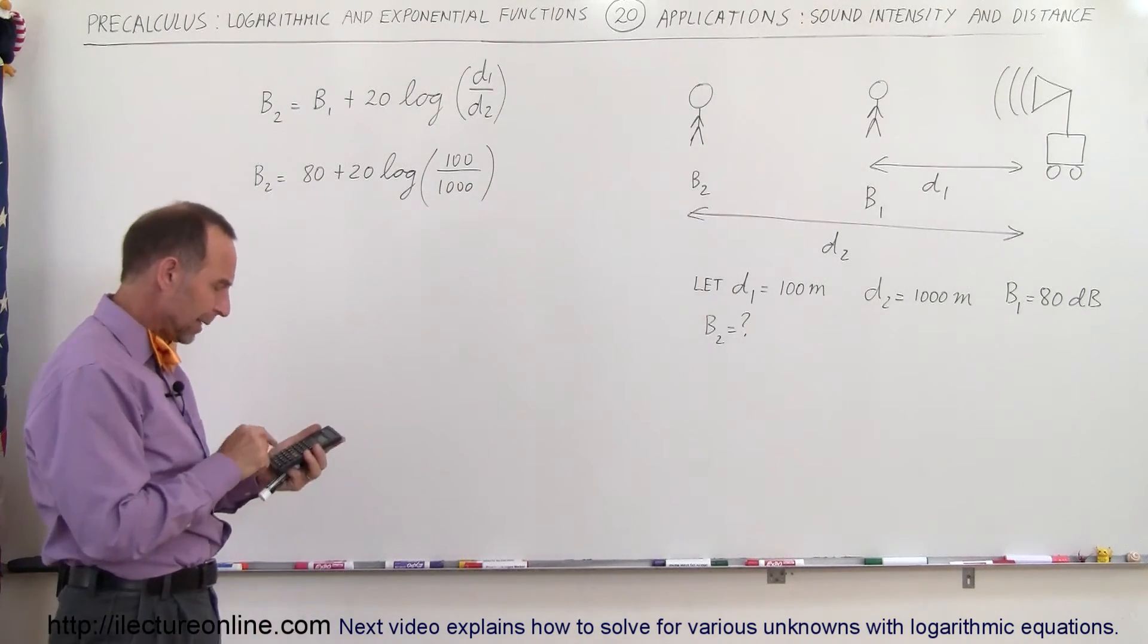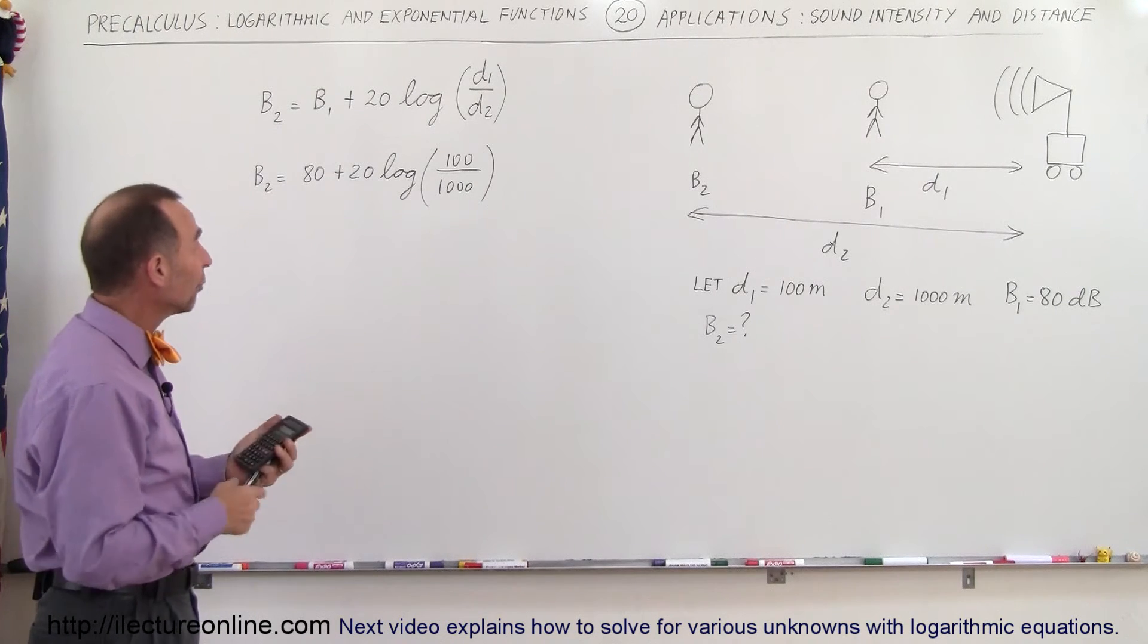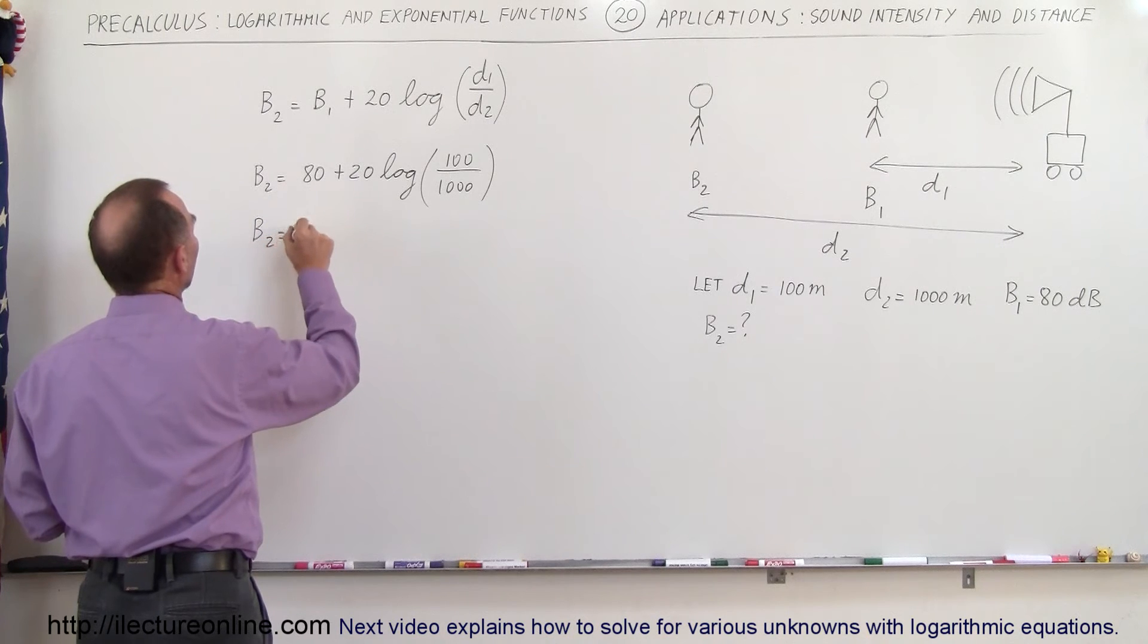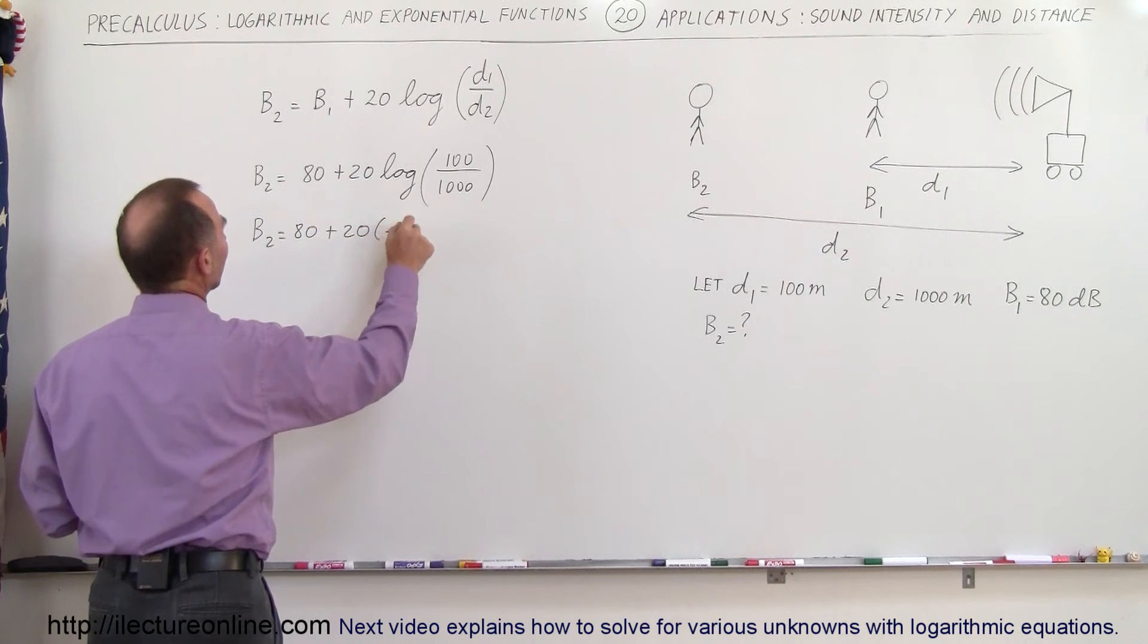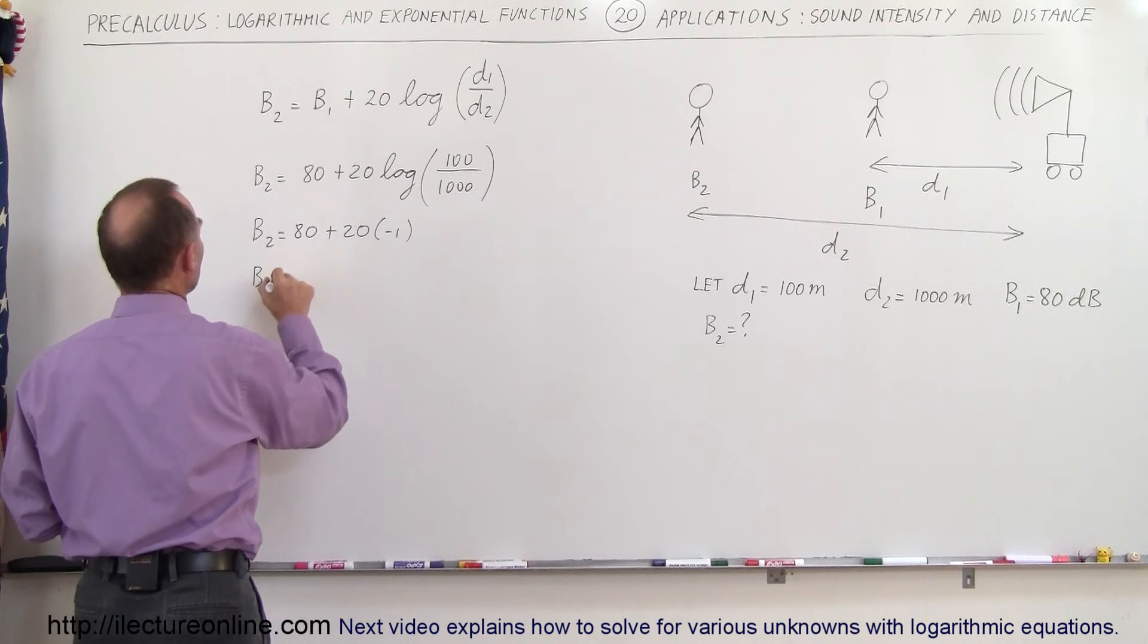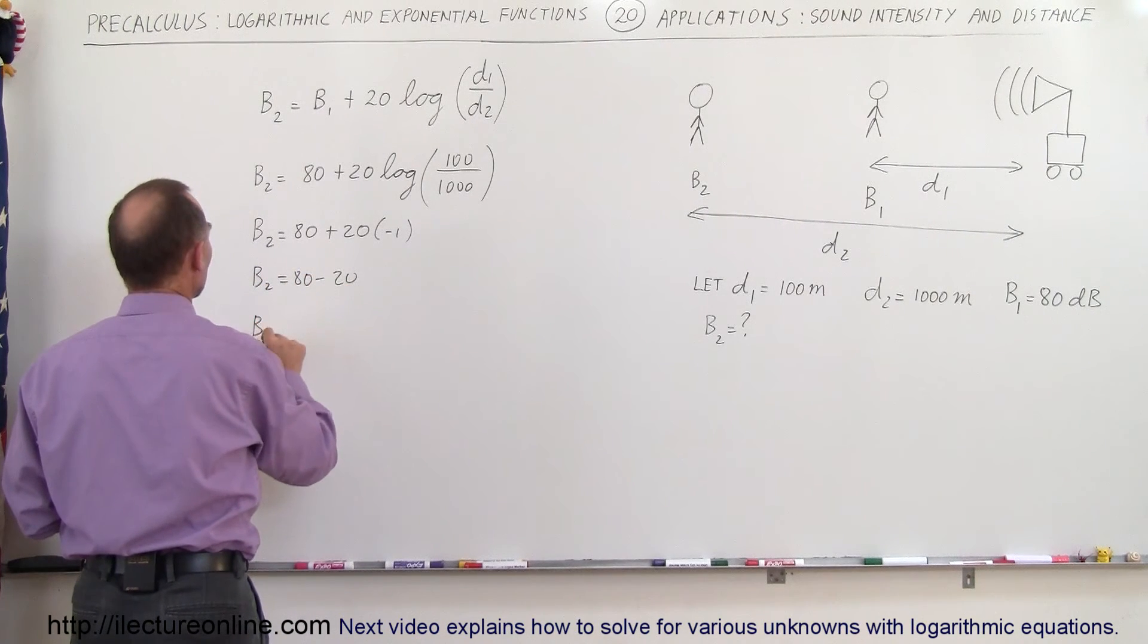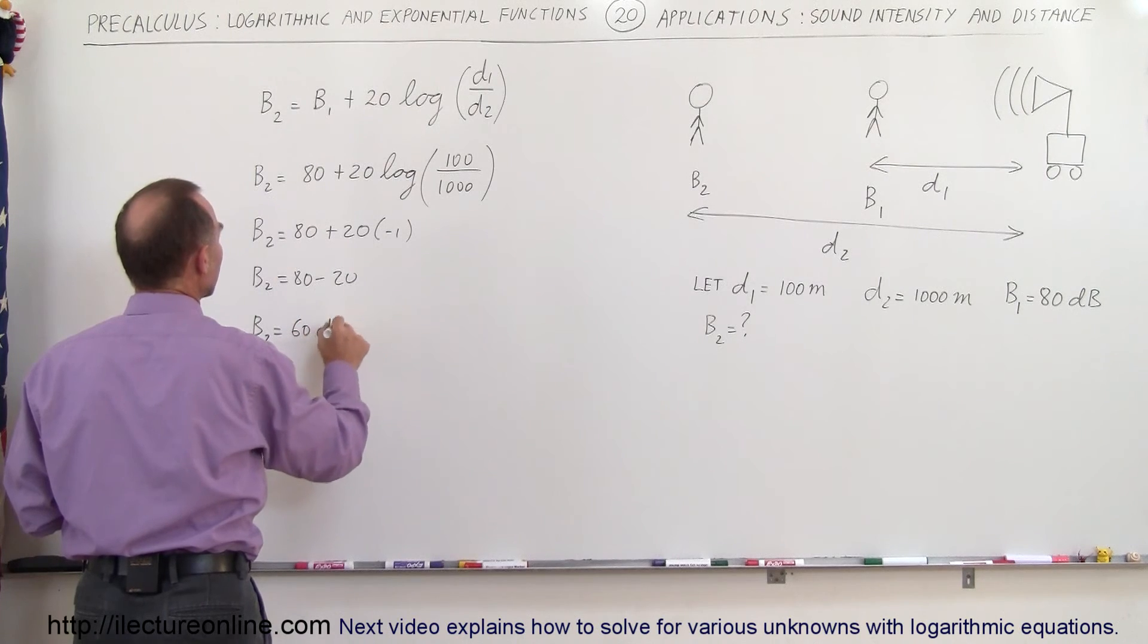So we take 0.1, take the log of that which is negative 1, so this becomes b2 is equal to 80 plus 20 times the negative 1, so therefore b2 is equal to 80 minus 20, so b2 is equal to 60 decibels.